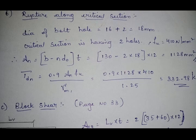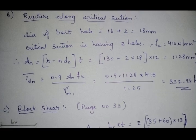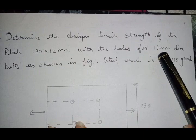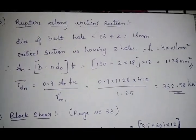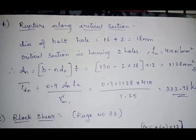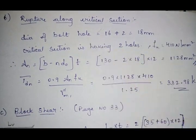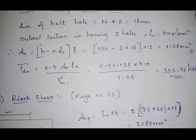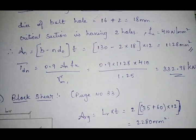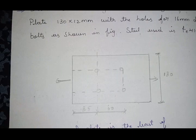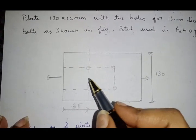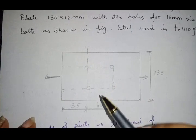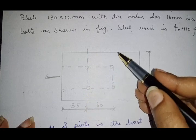The diameter of the bolt hole — the bolt diameter is 16 mm as given. We add a clearance of 2 mm, giving d0 = 18 mm (diameter of the bolt hole). The critical section has two bolts. The dotted lines in the figure indicate the critical section; rupture is always perpendicular to the direction of the applied load.